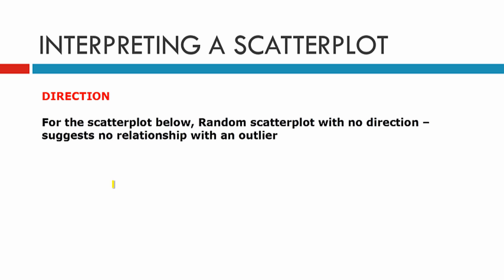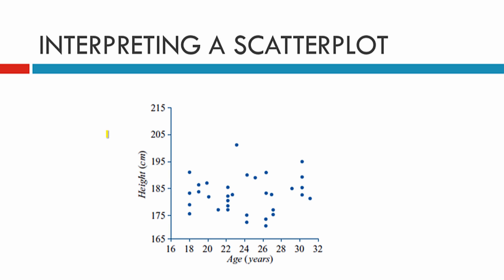Let's have a look at direction and outliers. For the scatterplot below, we can see that there is a random scatter with no direction, which suggests there is no relationship. It could have an outlier — this scatterplot is all over the place and there seems to be a little outlier out there. If it were further out, we could say more.